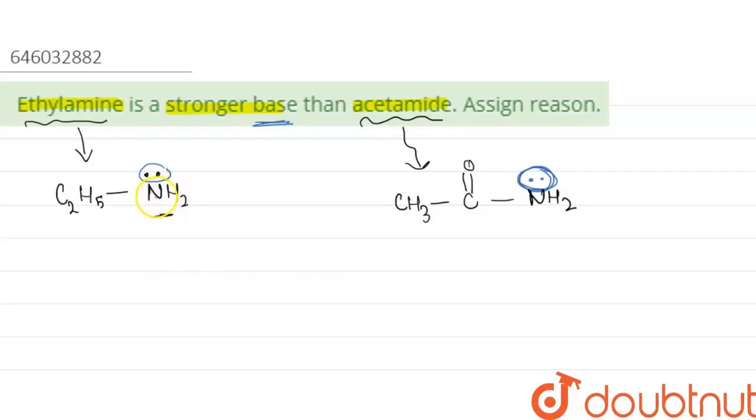So here in case of ethylamine, C2H5 have a plus I effect and will give electron to the NH2 group and will increase electron density. Due to plus I effect of ethyl group, the electron density on the nitrogen atom will increase, which leads to increase in basic nature.